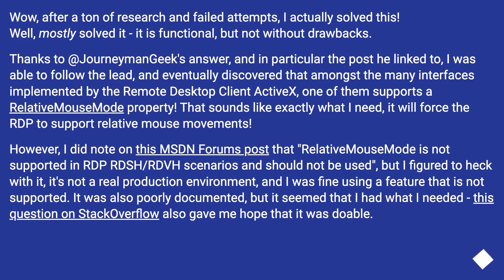After a ton of research and failed attempts, I actually solved this — well, mostly solved it. It is functional but not without drawbacks. Thanks to atjourneymagic's answer and the linked post, I discovered that amongst the many interfaces implemented by the remote desktop client ActiveX, one of them supports a relative mouse emode property. That sounds like exactly what I need — it will force RDP to support relative mouse movements. However, I noted on an MSDN forums post that relative mouse emode is not supported in RDP-RDSH-RDVH scenarios and should not be used. I figured to heck with it — it's not a real production environment. It was also poorly documented, but this question on Stack Overflow also gave me hope that it was doable. So I set to work implementing a simple WinForms app to host the ActiveX control with the unsafe interface properties set.